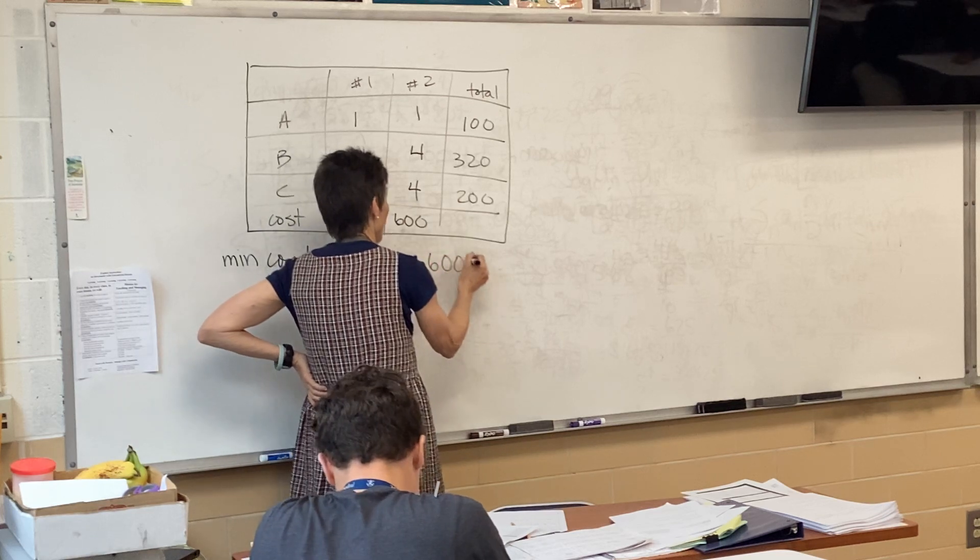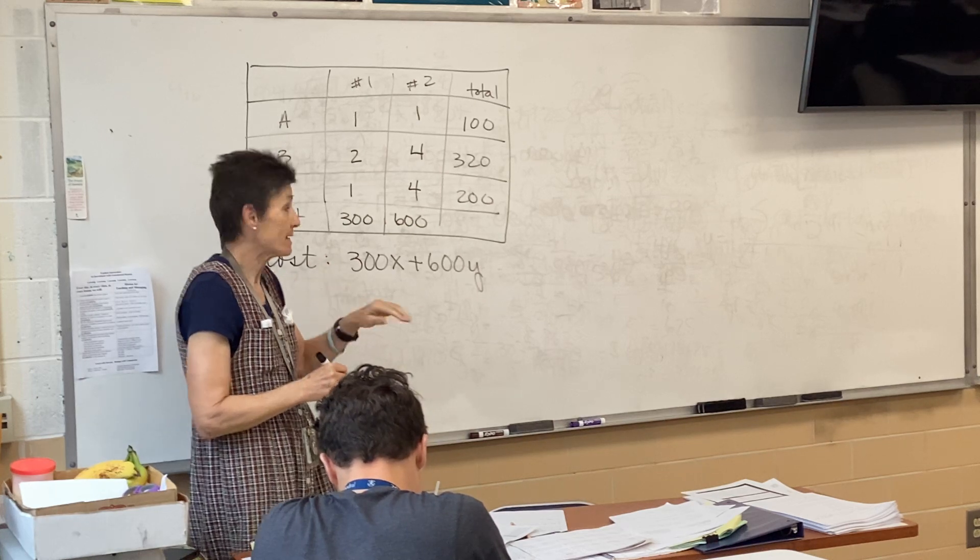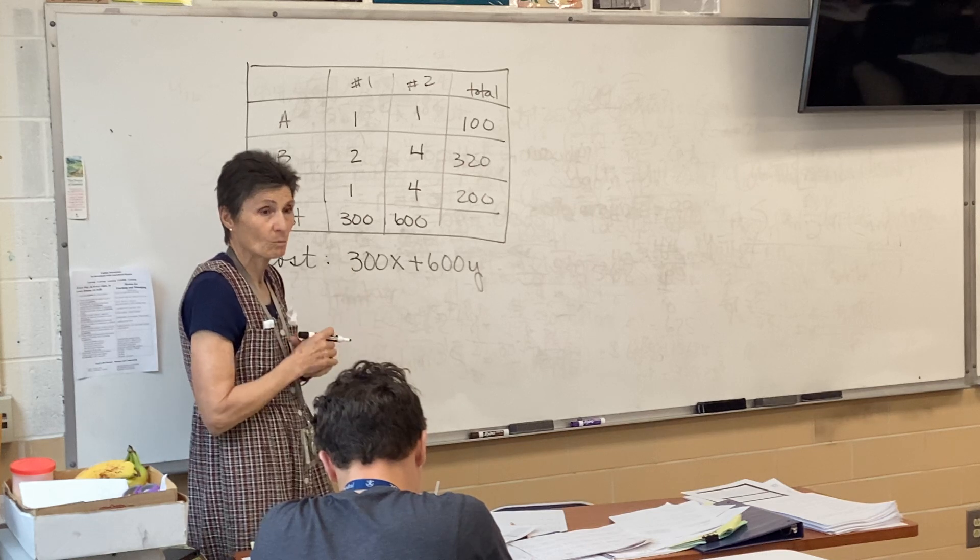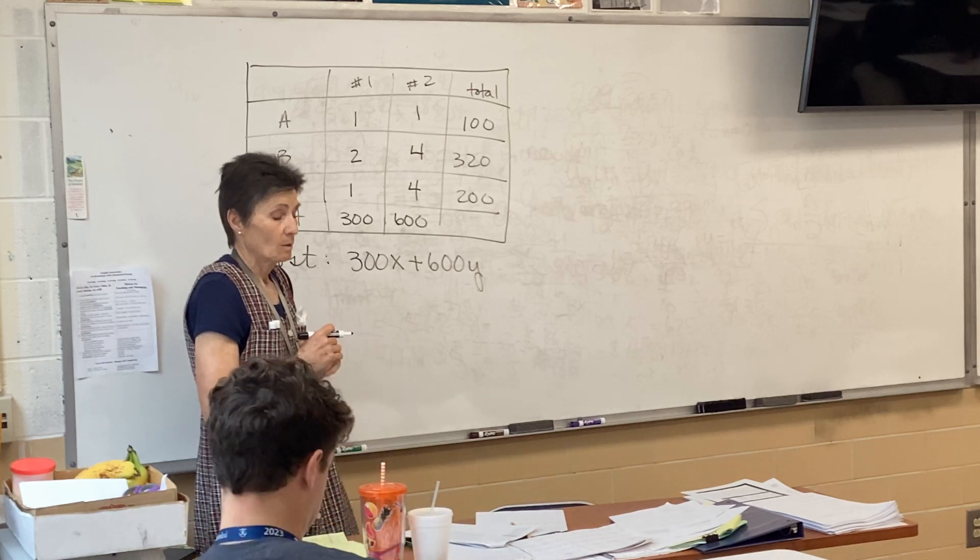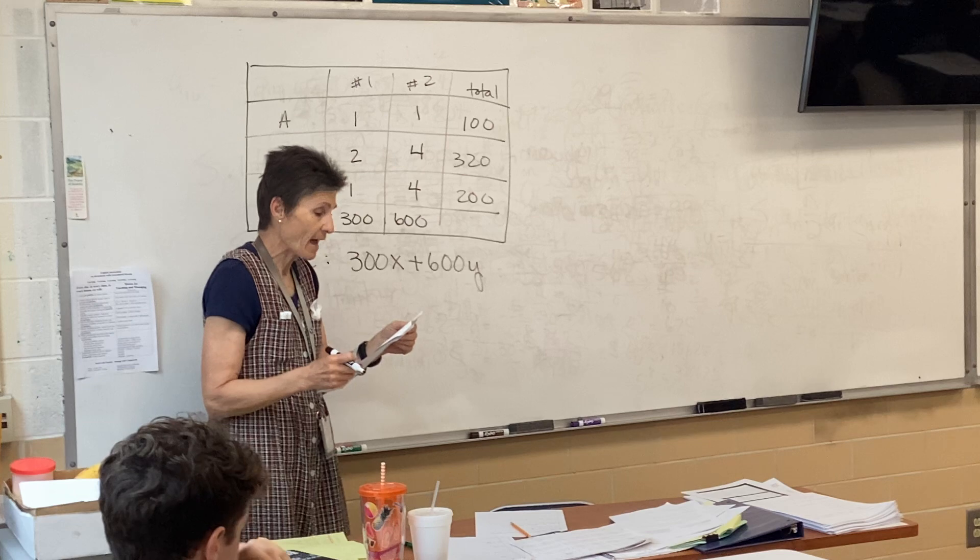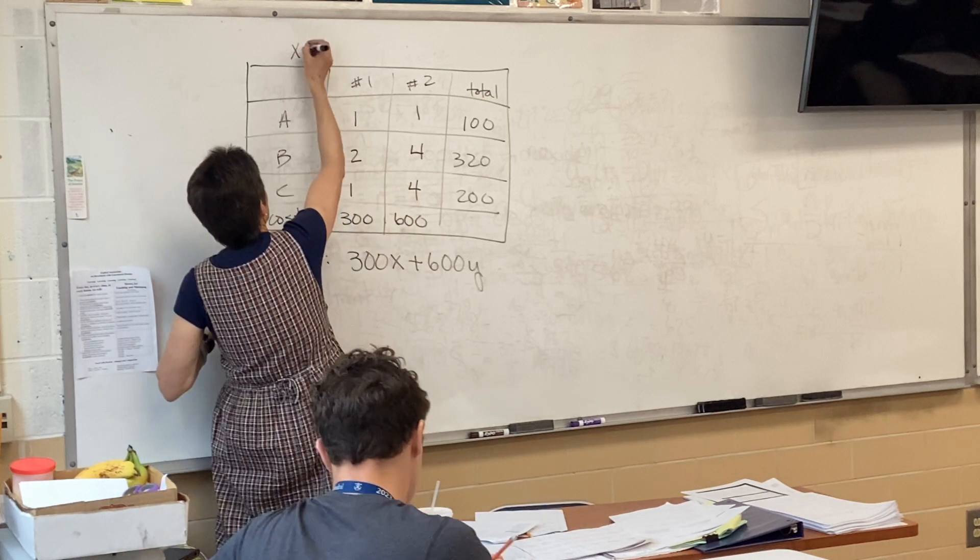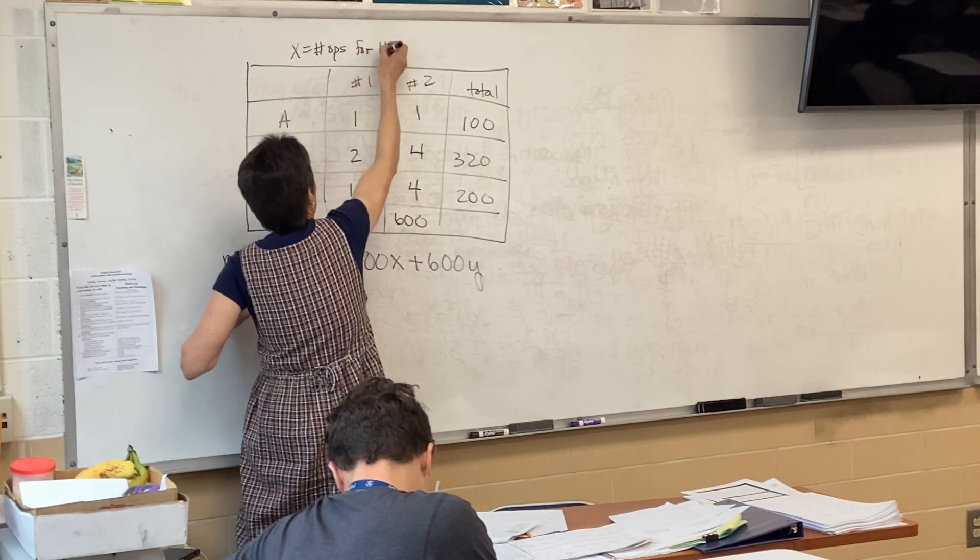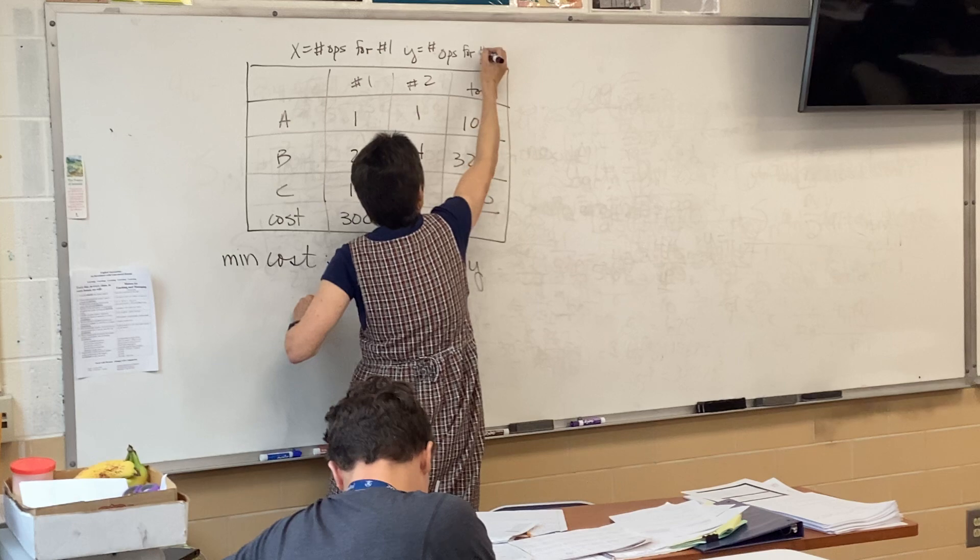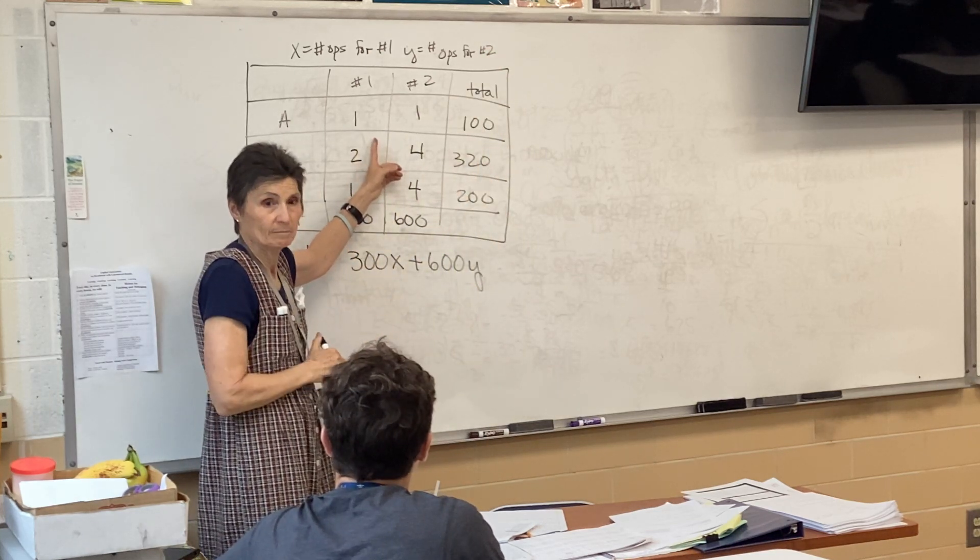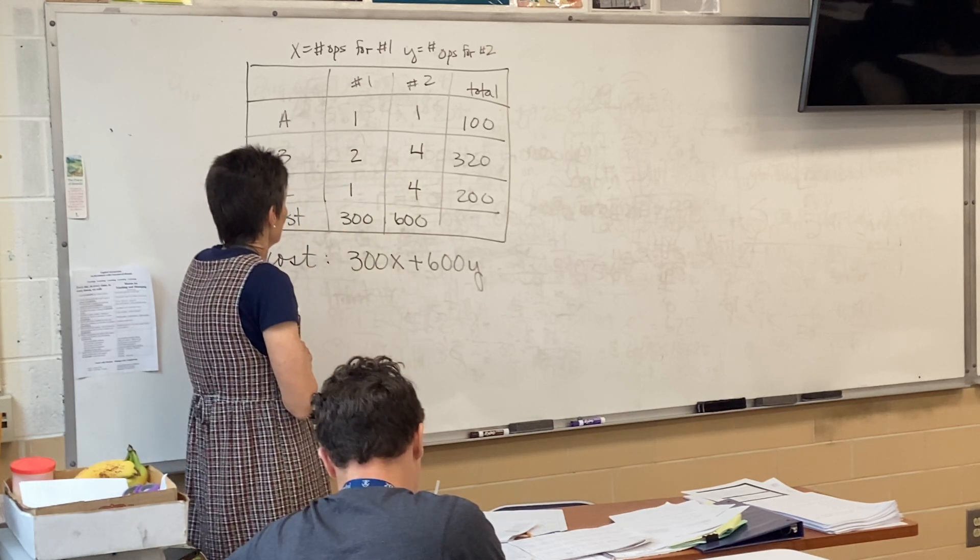300x plus 600y. Now, what are you letting x and y stand for then? I get this completely. I'm 100% behind it, but what are you letting x and y stand for? Well, one is a factory and two is a factory, so we're not saying x is the factory. What are we saying? The number of operations. X is the number of operations for number one, and y is the number of operations for number two. So an operation is like the production of a unit.